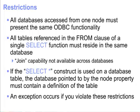There are restrictions you should consider when using multiple database access within a single ESQL node. All databases accessed from one node must present the same ODBC functionality. All tables referenced in the FROM clause of a single SELECT function must reside in the same database. In other words, a logical JOIN capability does not exist across databases in v6. If the SELECT star construct is used on a database table, the database pointed to by the node property must contain a definition of the table. You will receive an exception if you violate these restrictions.